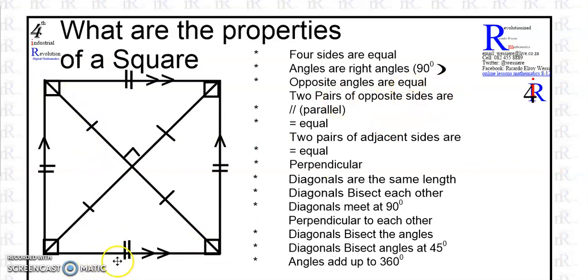Two pairs of opposite sides, this one and that one and this one and that one, are parallel to each other. Two pairs of adjacent sides are equal. Two pairs of adjacent sides are perpendicular, meaning meeting at 90 degrees.